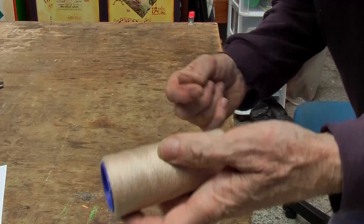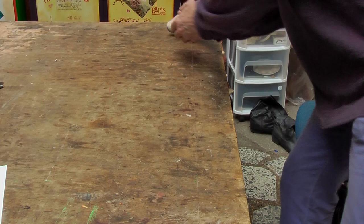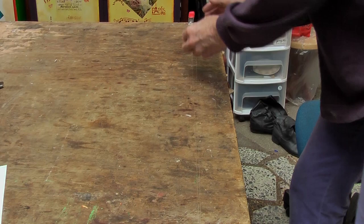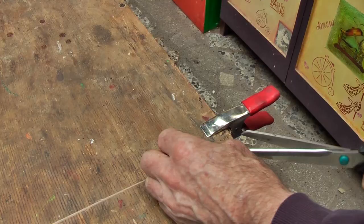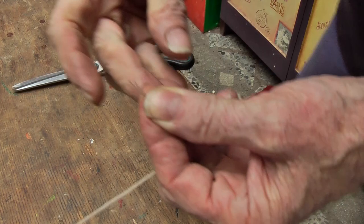Measure out some lengths of thread all the same, maybe about five threads. I'm going to wrap it around the table as my measure, about a meter. Then I can cut these threads and tie a knot in the end.